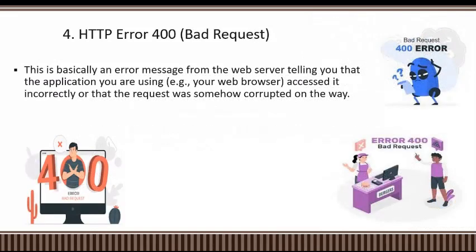The fourth error is HTTP error 400, known as Bad Request. As the name suggests, this is basically an error message from the web server telling you that the application you are using — for example, your web browser — is accessing it incorrectly, or that the request was somehow corrupted on the way. If you are accessing a web page and it has somehow been corrupted, you will not be able to access that page, and the error thrown is Bad Request — Error 400.